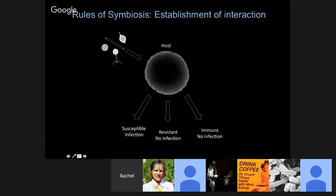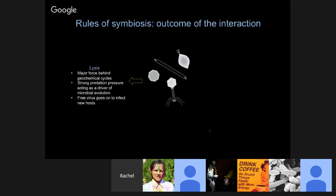If the host is susceptible, it gets infected by a virus. If it's resistant, it does not get infected. And if it's immune, it also does not get infected because this adaptive immune system prevents infection. We know from tens of years of studying virus-host interactions in eukaryotes, bacteria, and archaea that viruses can infect host cells and kill them.